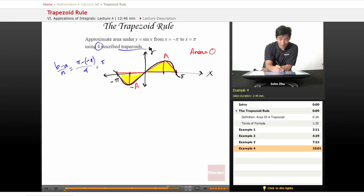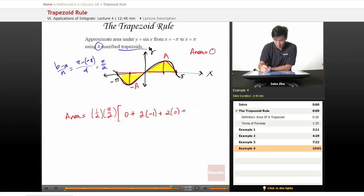So then our area will equal one-half pi over 2, which we got from here, times zero plus two times negative one, plus two times zero, plus two times one, plus zero.